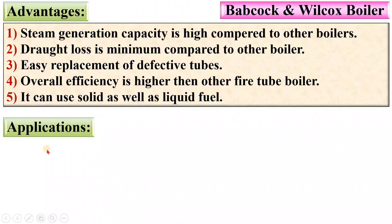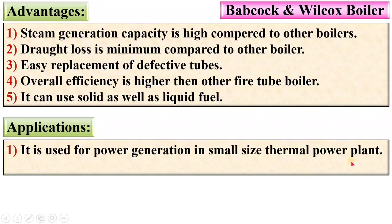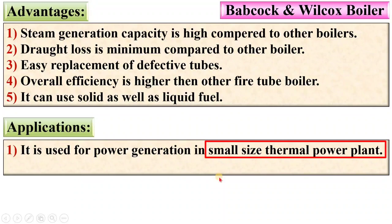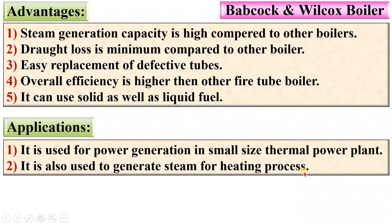Now the applications of the Babcock and Wilcox boiler. It is used for power generation in small size thermal power plants — it is not suitable for large size thermal power plants. It is also used to generate steam for heating processes. Thanks for watching this video — please press the like button to appreciate it.